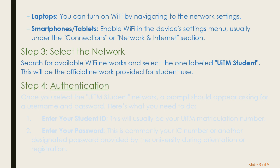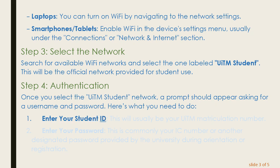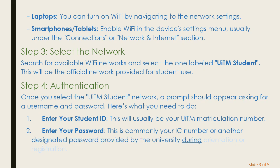Step 4: Authentication. Once you select the UITM Student network, a prompt should appear asking for a username and password. Enter your student ID — this will usually be your UITM matriculation number. Then enter your password, which is commonly your IC number or another designated password provided by the university during orientation or registration.